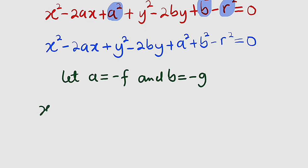So our equation becomes x squared. You see we have minus here but a is now negative f. Those two minus will transform to positive sign. So we have plus 2fx. Then plus y squared plus again because b is negative g, 2gy.